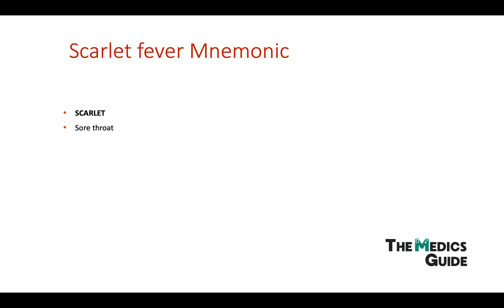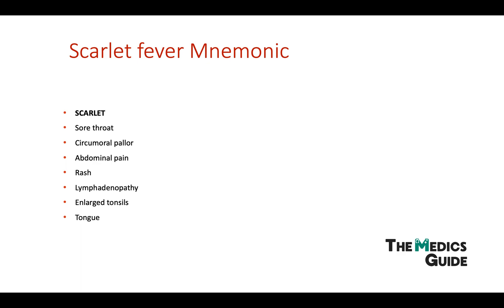S is for sore throat, C is for circumoral pallor, A is for abdominal pain, R is for the rash — remember it's sandpaper-like, L is for lymphadenopathy and enlarged tonsils, E is for enlarged tonsils, and T is for the tongue — remember, a strawberry tongue. I hope that makes sense.